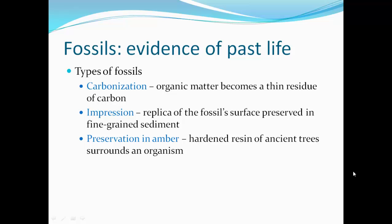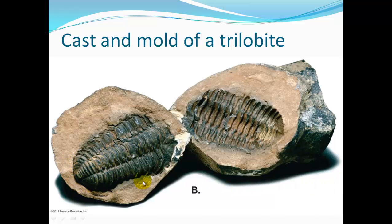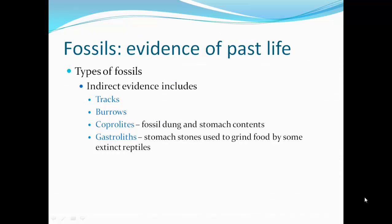Preservation in amber: the hardened resin of ancient trees surrounding an organism — you might find a prehistoric mosquito in there. Here is a cast and mold of a trilobite — the trilobite is my favorite fossil. It's one of the first invertebrate creatures with eyes that have overlapping fields of vision doing some 3D. Here's the mold, and here's the cast. Indirect evidence includes tracks, burrows, coprolites, and gastroliths. Tracks are pathways a creature may have taken — seeing its footprints. Burrows are the homes of a burrowing critter preserved in rock. Coprolites are fossil dung and stomach contents. Gastroliths are stomach stones used to grind food by some extinct reptiles.